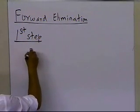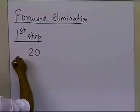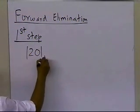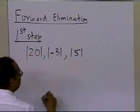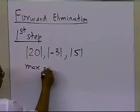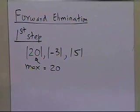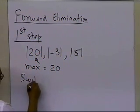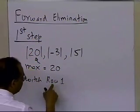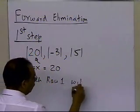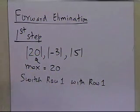Before we do any elimination — that is, making elements zero — we have to look at whether we need to switch any rows. Since we are at the first step of forward elimination, we look at the first column. The elements of the first column, in absolute value, are 20, 3, and 5. The maximum of these is 20, which is in the first row.